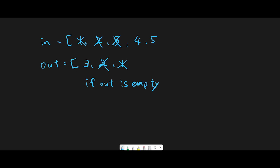Without the empty check, four and five would be moved to output, making output look like five, four. Then we can't remove three — we'd remove four instead, which is the wrong answer. That's why the empty check is critical. If output still has three, we don't add new numbers to output, so we correctly remove and return three.